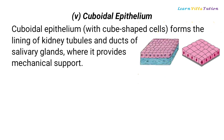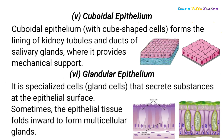Cuboidal Epithelium, with cube-shaped cells, forms the lining of kidney tubules and ducts of salivary glands, where it provides mechanical support. Glandular Epithelium consists of specialized gland cells that secrete substances at the epithelial surface. Sometimes the epithelial tissue folds inward to form multicellular glands.